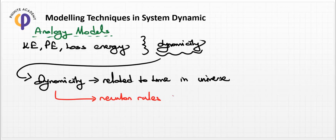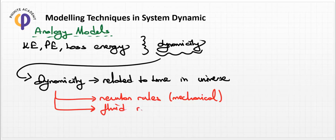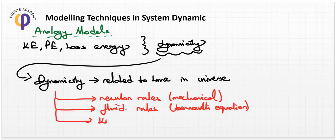For example, F = ma. The mechanical system rule is based on Newton's laws. In another way, for fluid systems — hydraulic or other — the system can be interpreted using Bernoulli's equations. For electrical systems, we use Kirchhoff's rules, which are directly related to the electrical system.